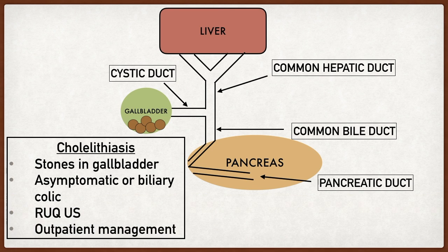How do gallstones form? Bile is made up of cholesterol, bile salts, and bilirubin. If you get an increased percentage of any of those, it makes the bile more concentrated, which could lead to sludge. As that sludge builds up, it leads to stone formation.